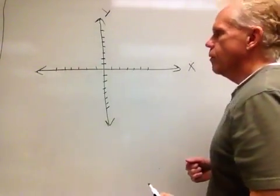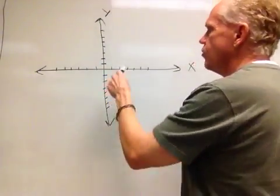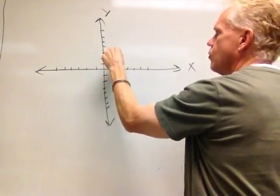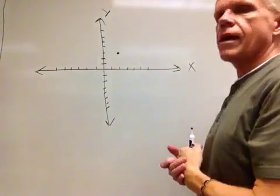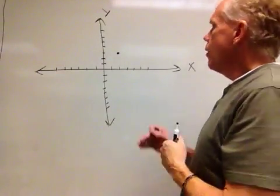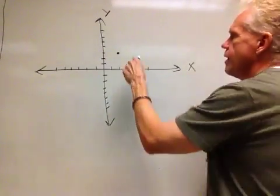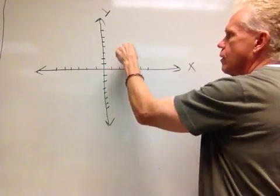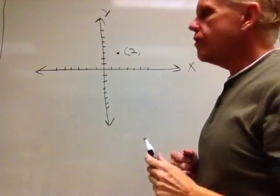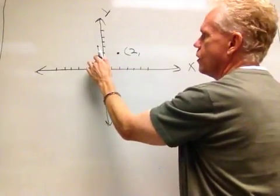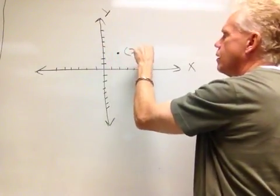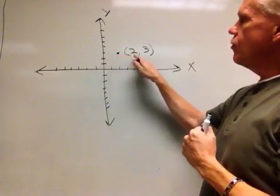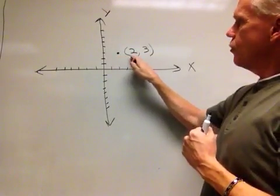For example, if we were to pick a point on this graph and mark that point right there, on the x-axis that point corresponds to 1, 2. On the y-axis, that point corresponds to 1, 2, 3. So we can label this point using an ordered pair 2, 3.